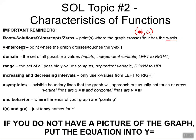The y-intercept — this is the point where the graph crosses or touches the y-axis, and that ordered pair would be zero, comma, some number.